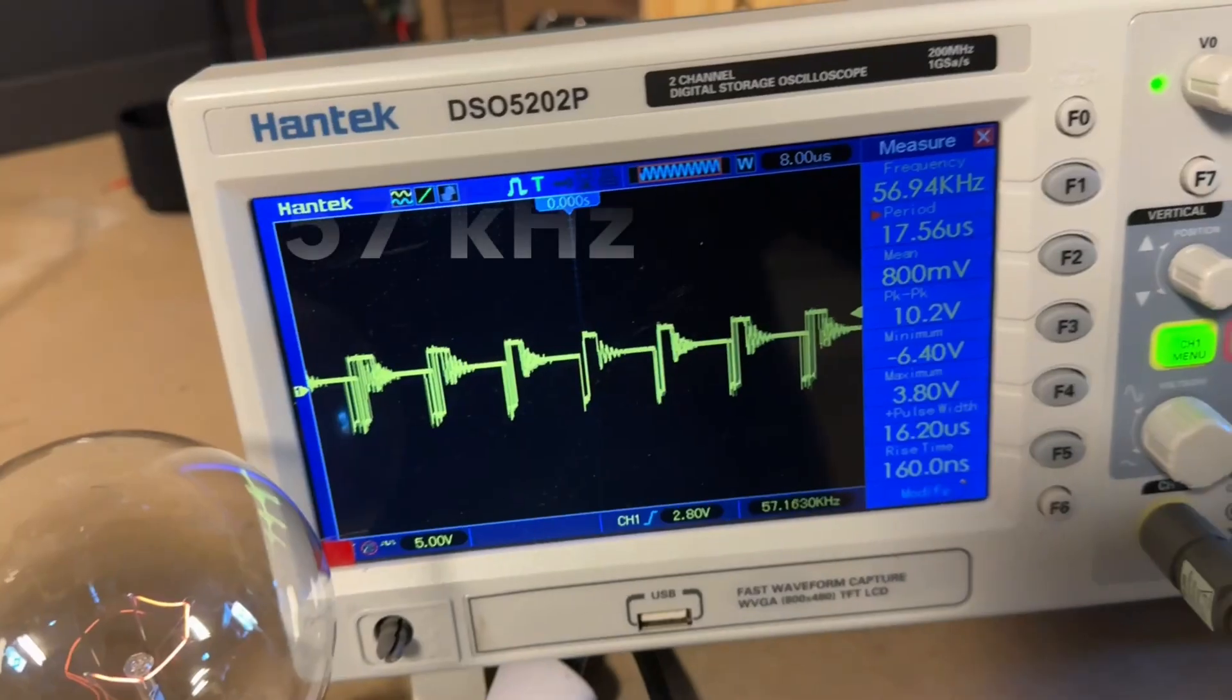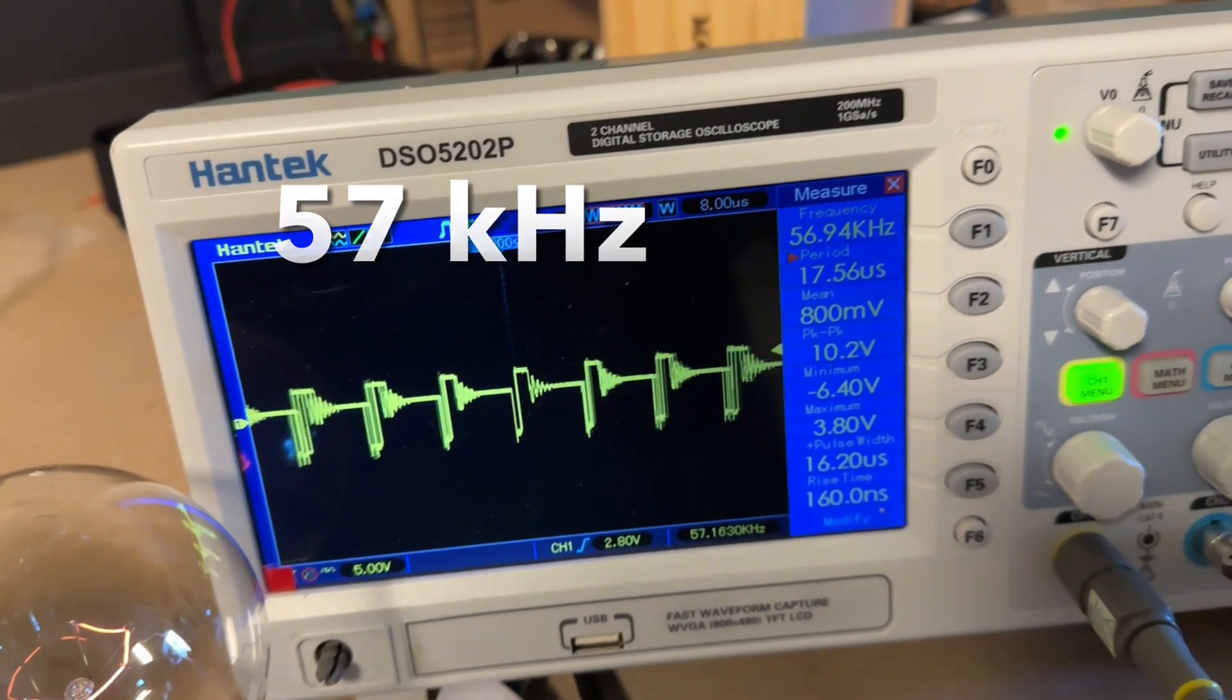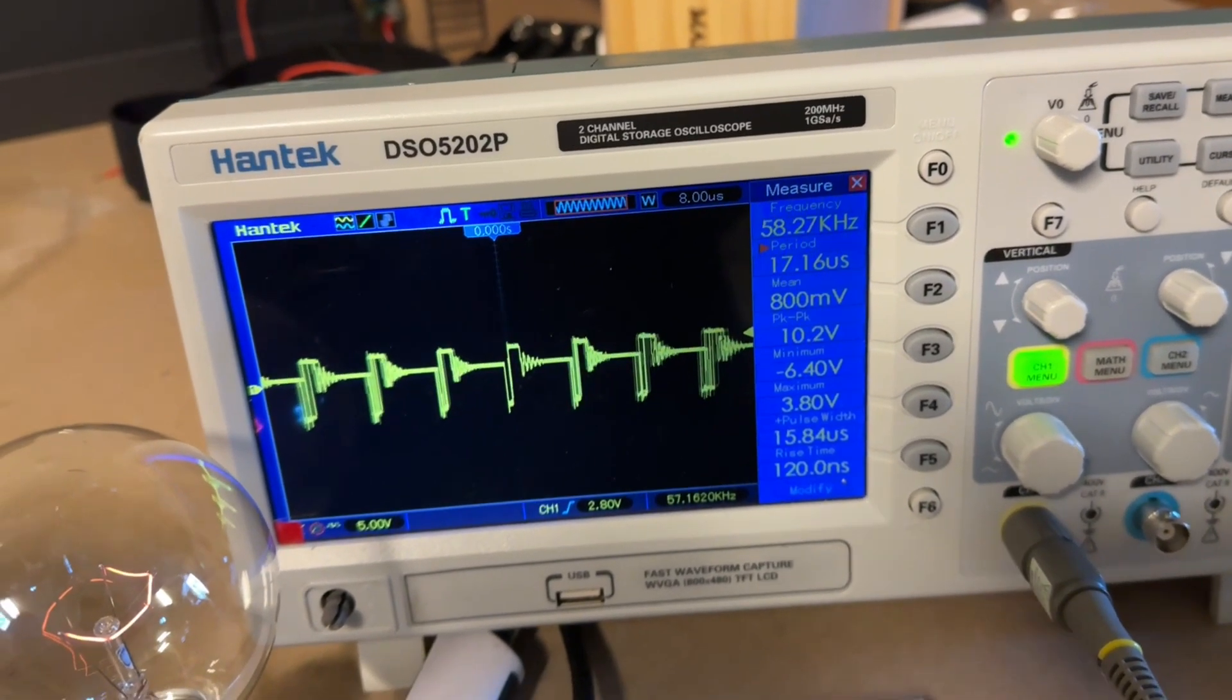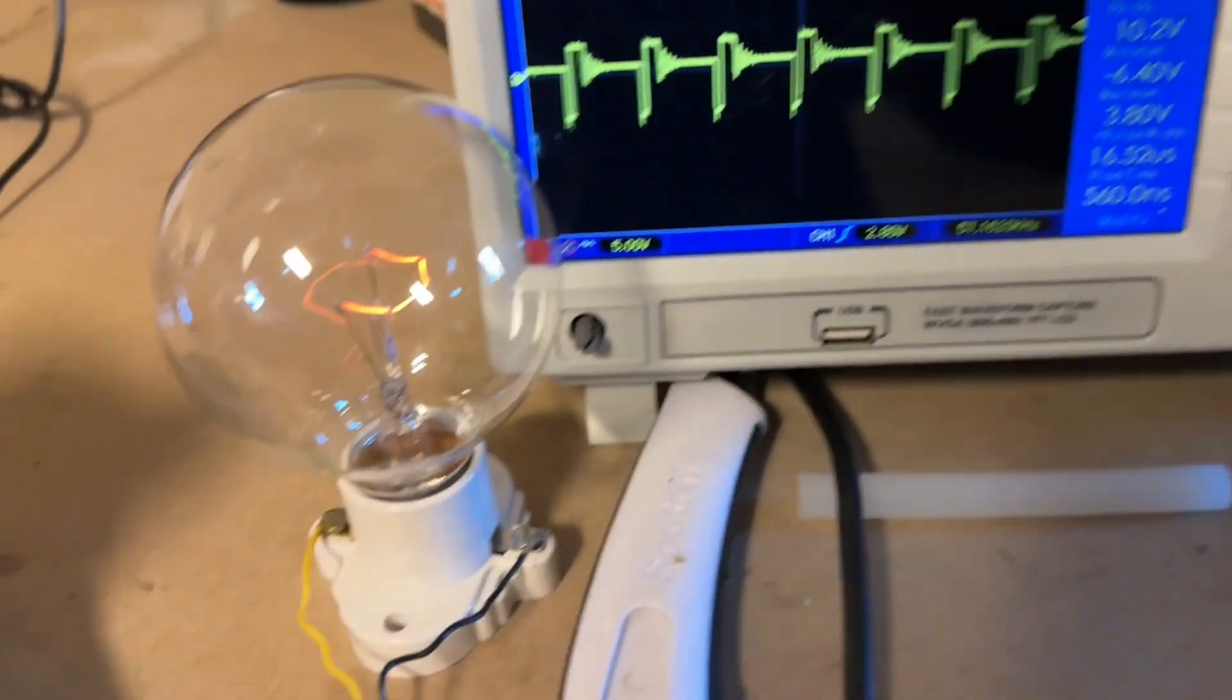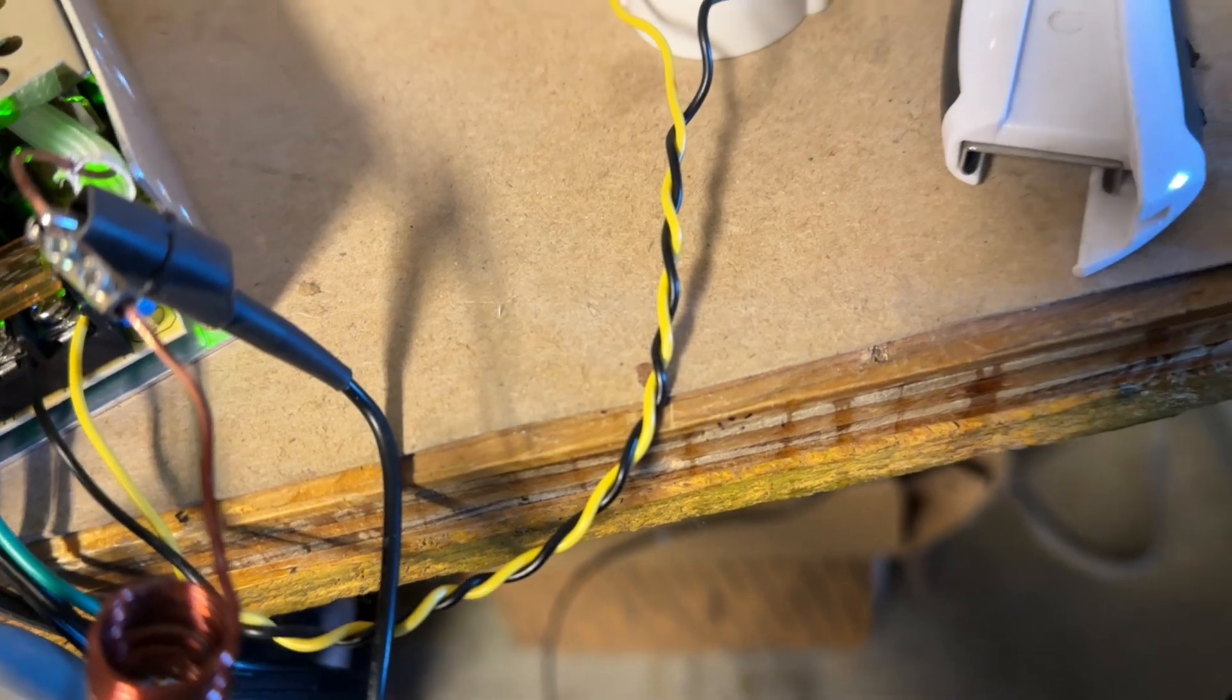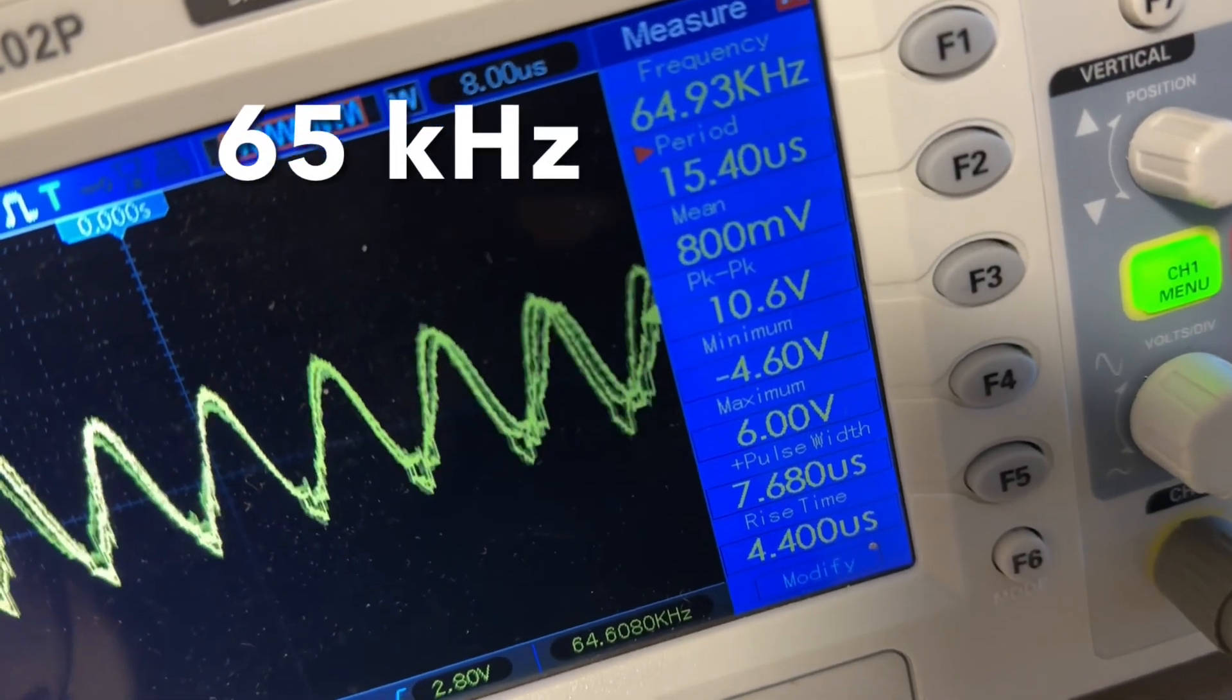A load has to be connected to the output of the switch mode power supply. You can see that bulb over there, before it'll output anything, and with no load it won't output anything. So I've got a bulb here, this is actually a 60 watt bulb. You can see I get sine waves.